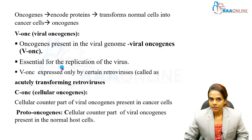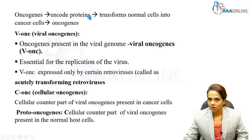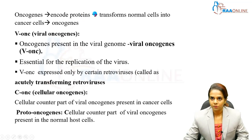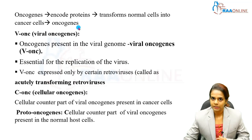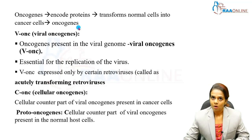Oncogenes are genes that encode proteins called oncoproteins. These oncoproteins transform normal cells into cancer cells. So oncogenes encode proteins called oncoproteins, which transform normal host cells into abnormal cancer cells.